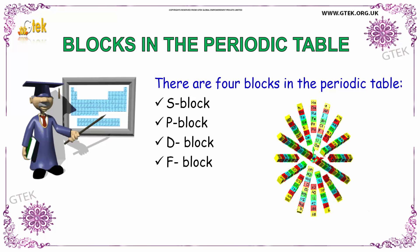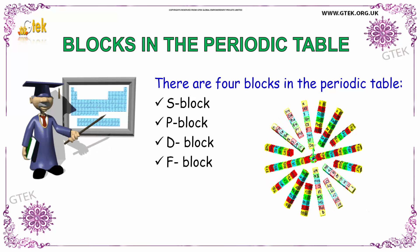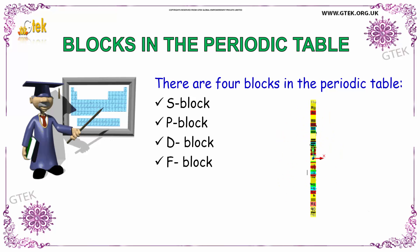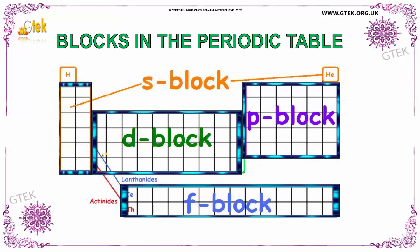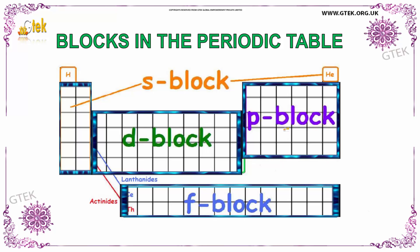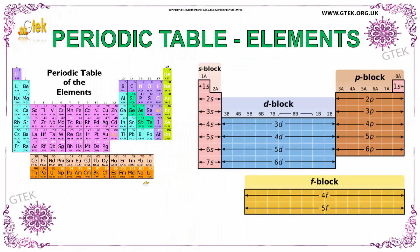Now we'll talk about blocks in the periodic table. There are four blocks: S block, P block, D block, and F block. The elements on the left side are the S block, this region is the D block, these two rows are the F block, and this one is the P block.